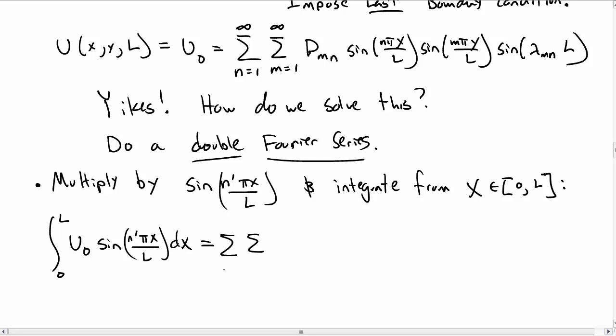The right hand side we have our two sums. We have d_mn which is a constant, and then we have an integral of sin(nπx/L)sin(n'πx/L) from zero to L. Then we have other stuff that doesn't depend on x: sin(mπy/L) and the sinh(λ_mn·L).